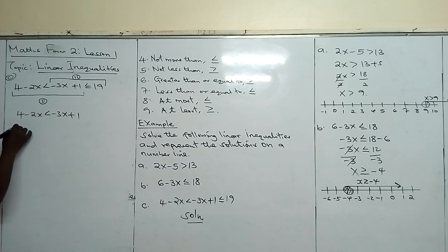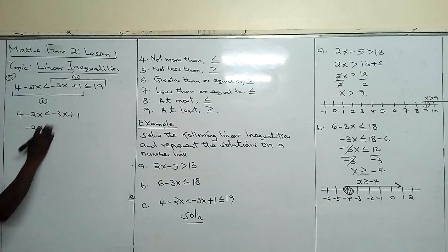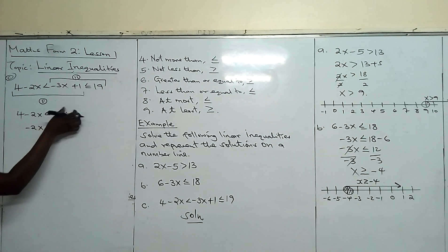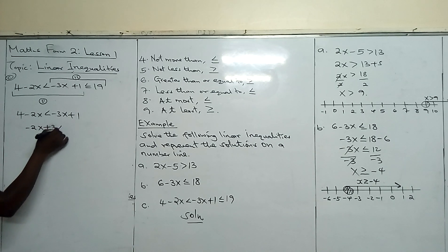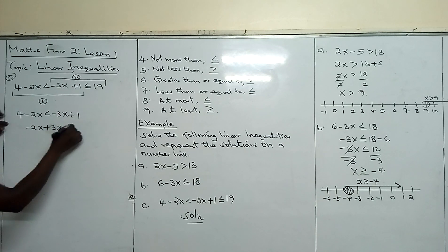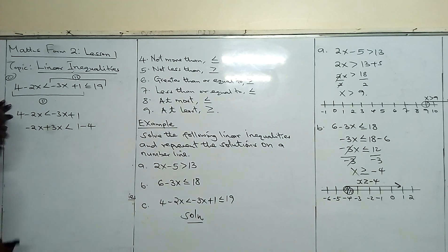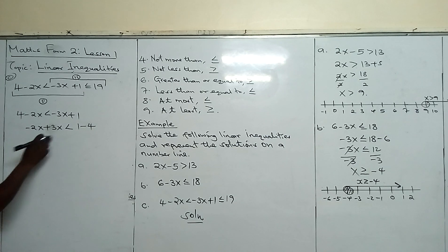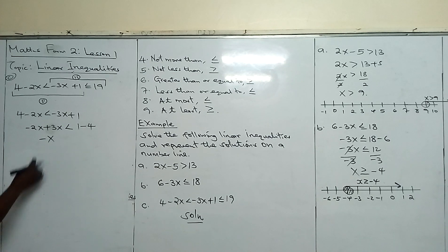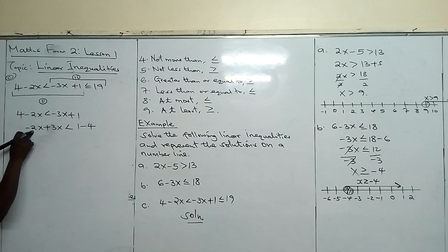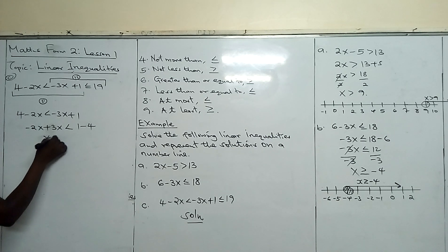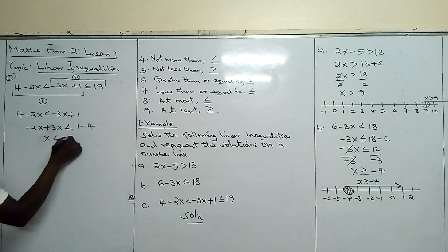For the first inequality: 4 minus 2x less than minus 3x plus 1. We put like terms together — bring minus 3x to the left side, making it positive 3x. We take 4 to the other side, becoming minus 4. So we have minus 2x plus 3x less than 1 minus 4, giving us x less than minus 3.